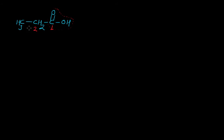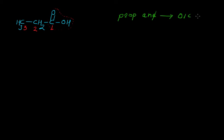Then we have carbon 2 as well as 3. If you consider the parent alkane, the prefix would be 'prop' and the suffix would be 'ane'. But when giving the IUPAC name to a carboxylic acid, the 'e' is replaced with 'oic acid'. So the IUPAC name of this compound becomes propanoic acid.